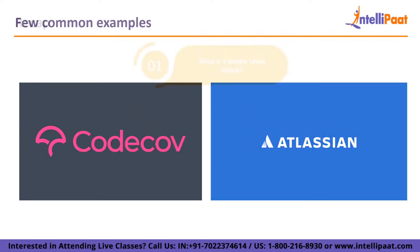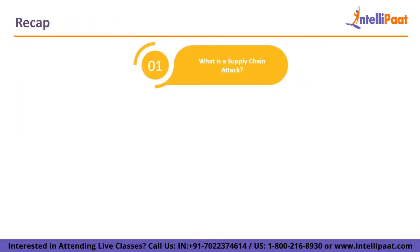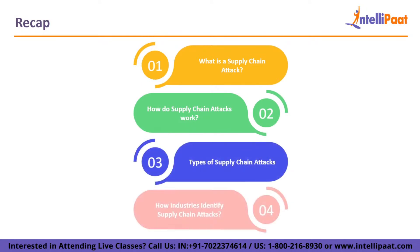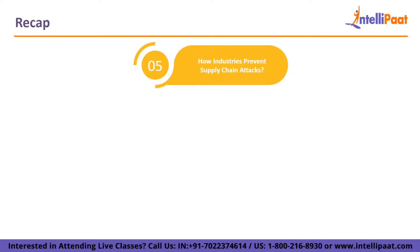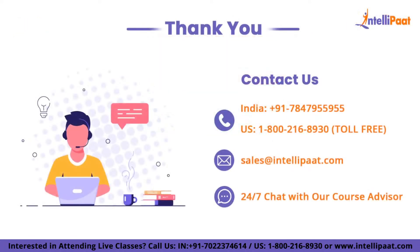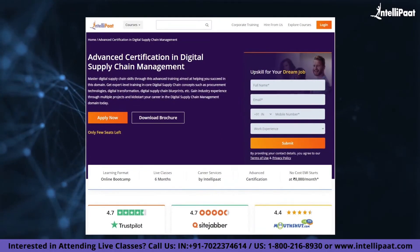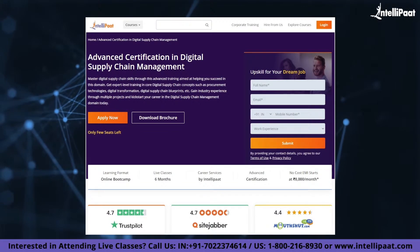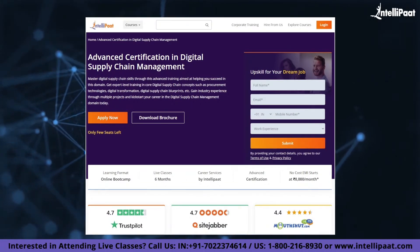Now let us have a quick recap of the entire session. Initially we went through what is a supply chain attack, then we saw how supply chain attacks work, after which we went through the types of supply chain attacks and how industries identify them, followed by how industries prevent supply chain attacks, and finally we covered a few common examples. IntelliPath provides an advanced certification in digital supply chain management, where you will learn supply chain concepts such as procurement technologies, digital transformation, and digital supply chain blueprints.